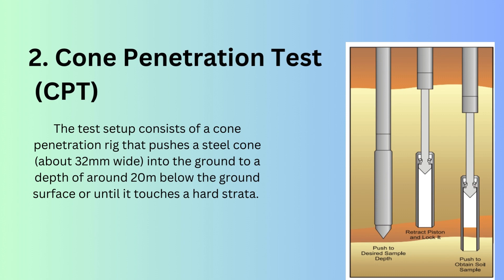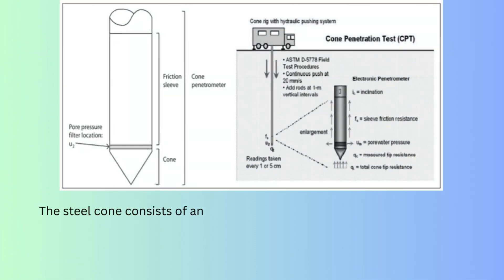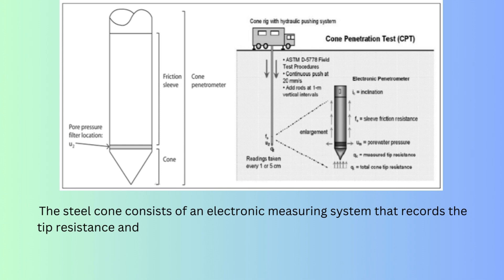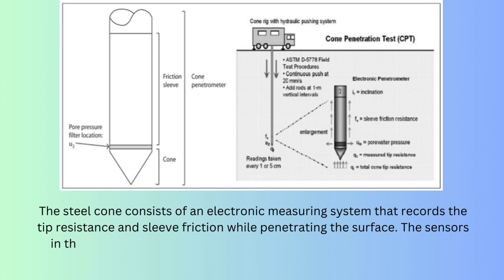A Cone Penetration Test, or CPT, is a direct soil exploration method performed directly on the ground surface. The test setup consists of a cone penetration rig that pushes a steel cone about 32 mm wide into the ground to a depth of around 20 meters below the ground surface, or until it touches a hard strata. The steel cone consists of an electronic measuring system that records the tip resistance and sleeve friction while penetrating the surface. The sensors in the cone tip measure the degree of resistance, and the sensors in the friction sleeve measure the sleeve friction, as shown in the figure.